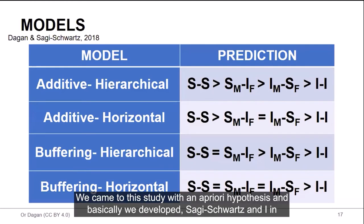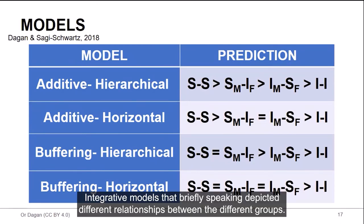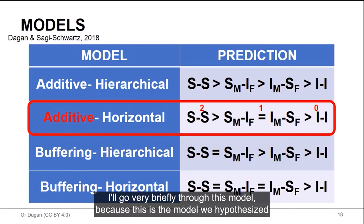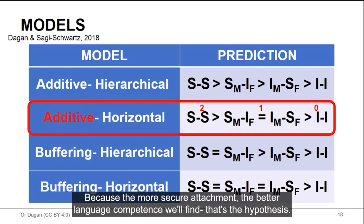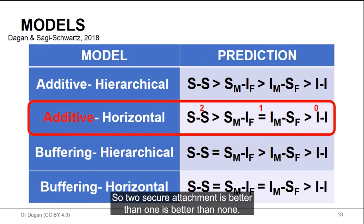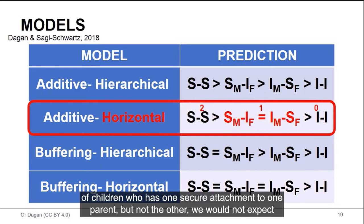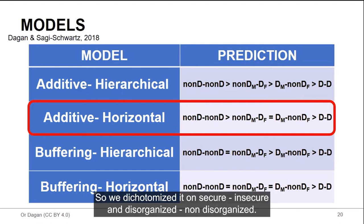So what did we find? Before that, we came to this study with an a priori hypothesis. And basically, we developed, Avi Sagi-Schwartz and I in 2018 published a paper with different models, integrative models, that briefly speaking, depict different relationships between the different groups. I'll go very briefly through this model, because this is the model we hypothesized to be corroborated in this study: additive horizontal. Why additive? Because the more secure attachment, the better language competence we'll find. That's the hypothesis. So two secure attachments is better than one is better than none. And we also hypothesize this to be horizontal in the sense that if you look at the two middle groups of children who have one secure attachment to one parent, but not the other, we would not expect significant difference between these two groups. And we did the same as Carlo initially suggested with disorganized versus non-disorganized groups. Okay, so we dichotomized on secure-insecure and disorganized-non-disorganized.